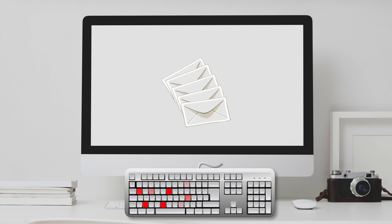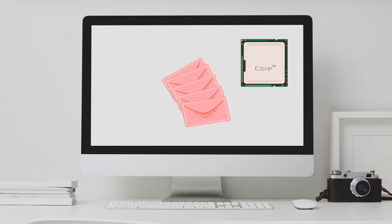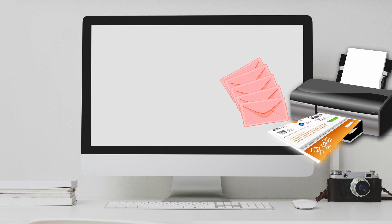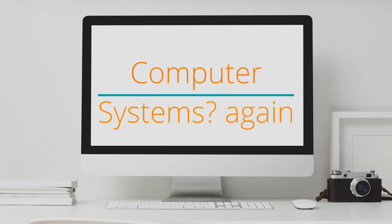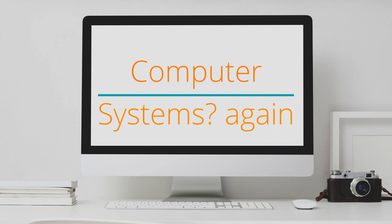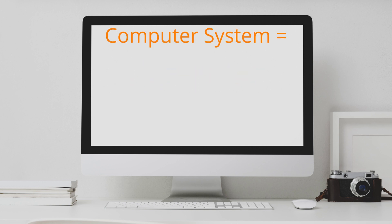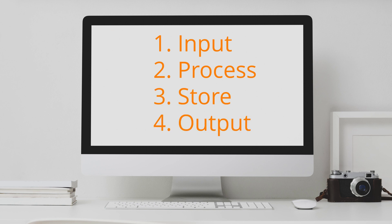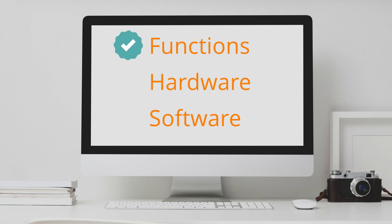So we saw that Mr. Accountant and his office function similarly to a computer system. They both have capability for input, process, store, and output. Now let's read what a computer system is again: a computer system is a computer combined with other hardware and software needed to perform desired functions. We now know the functions, but it also mentions hardware and software — let's find out what they are.